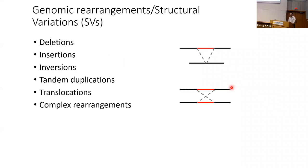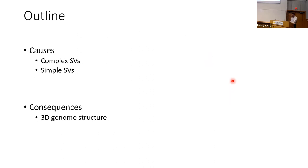My lab focuses on structural variations, which are equivalent to genomic rearrangements that include deletions, insertions, duplications, inversions, translocations, and some of them can be fairly complex. Today I'm going to talk about the two main directions of the lab: one is how they form in cancer, and the other is once they form, how do they drive the disease.